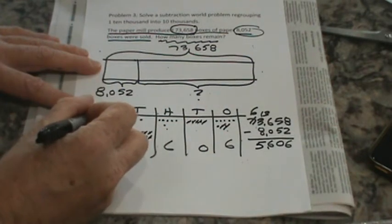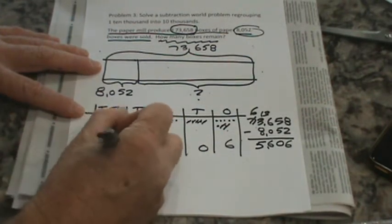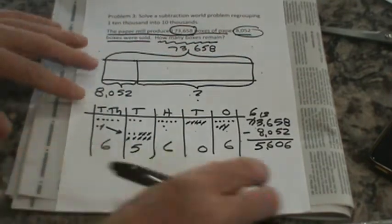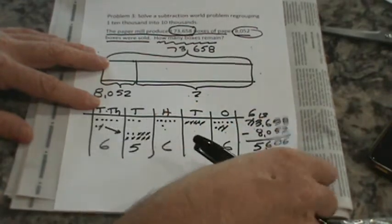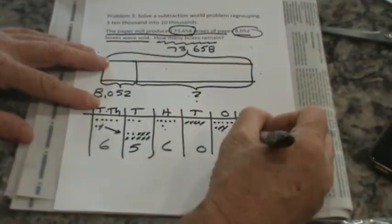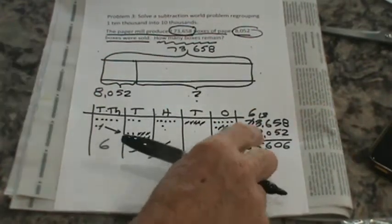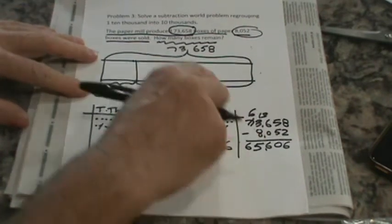I'm left with five thousands and how many ten thousands? One, two, three, four, five, six. Alright, so let's just do a little addition to double-check this. I'm going to add these two numbers together and we should get - oops, I didn't bring down my six. I'm going to add sixty-five thousand six hundred six to eight thousand fifty-two. We should wind up with that.